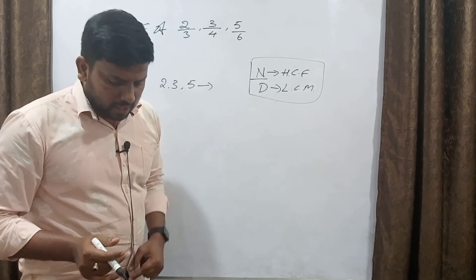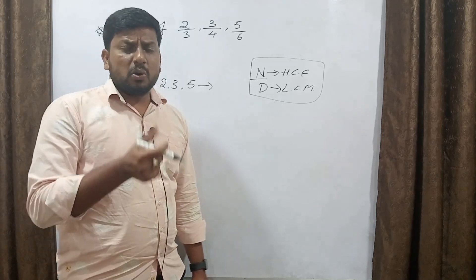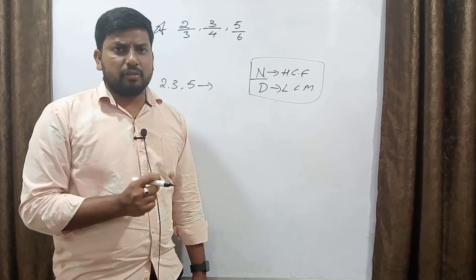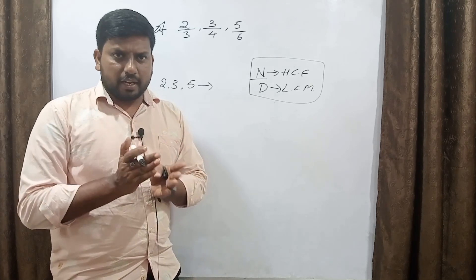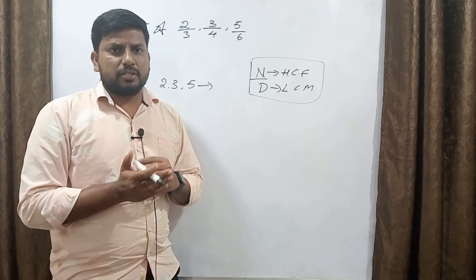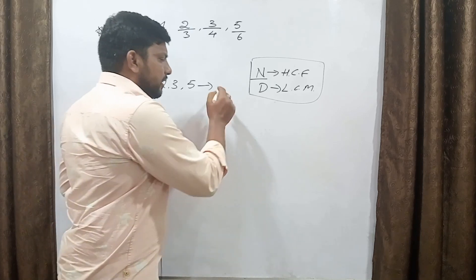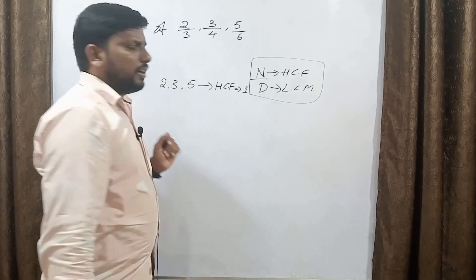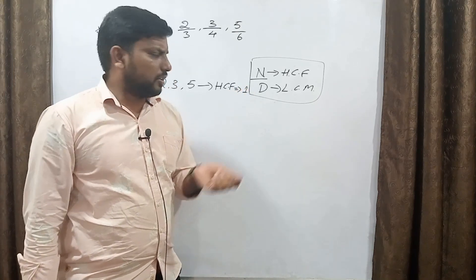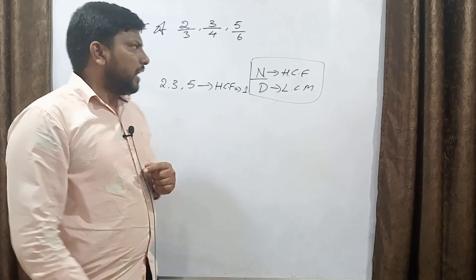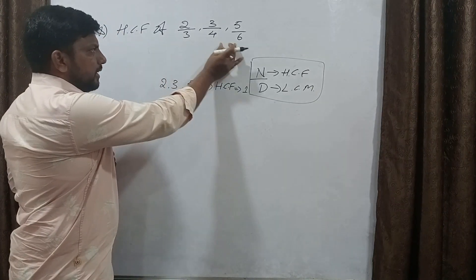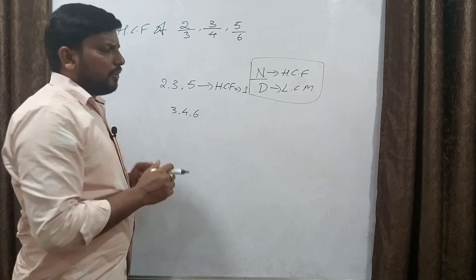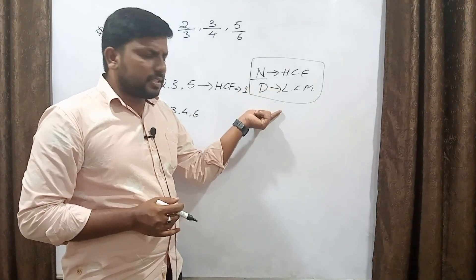As discussed in our previous video, if you have prime numbers you can check the HCF by checking their factors. The remaining denominators are 3, 4, and 6. You can verify this from the second video.